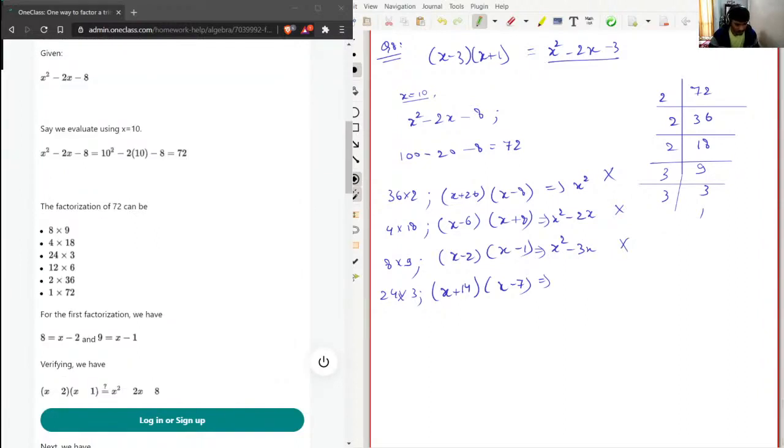I have skipped some factors, I think. Factors was 8 times 9, I have this. 4 times 18, yeah I have this. 24 times 3, yep I have this. 12 times 6, yeah there is one more possible combination of 12 times 6 and 1 times 72. 2 times 36 I have done.